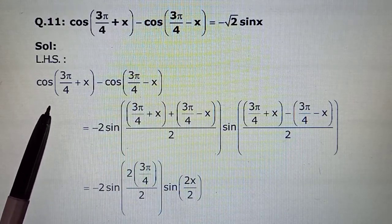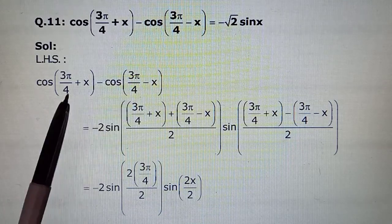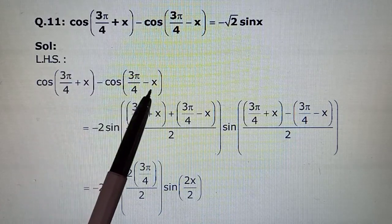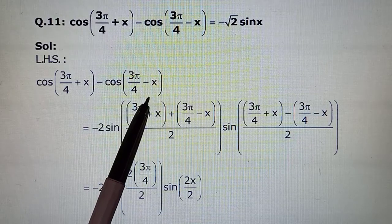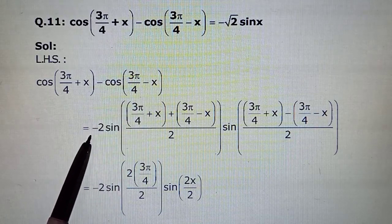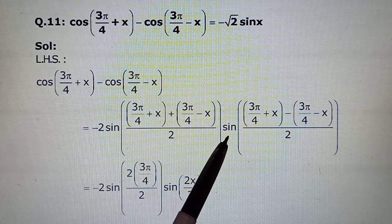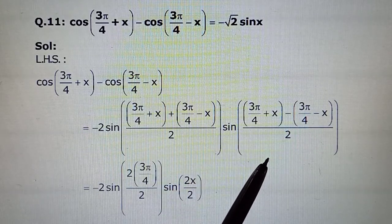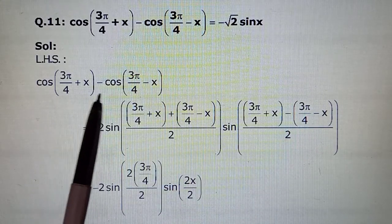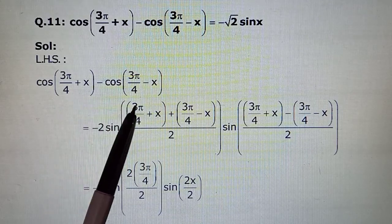So we will apply that formula cos C - cos D, taking this whole as C and this whole as D. That used to be -2 sin(C+D)/2 and sin(C-D)/2.